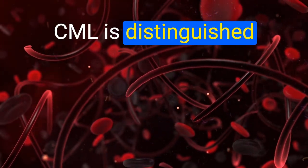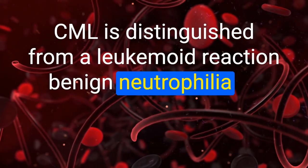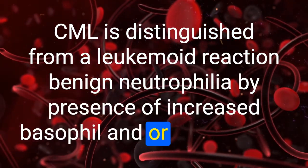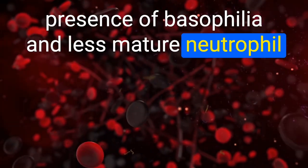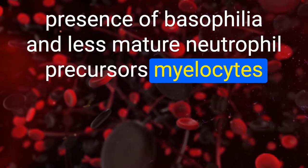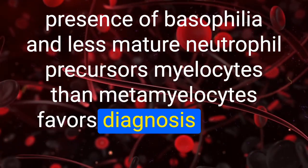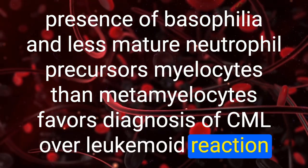CML is distinguished from a leukemoid reaction (benign neutrophilia) by the presence of increased basophils and/or myelocytes. Basophilia and less mature neutrophil precursors (myelocytes more than metamyelocytes) favor a diagnosis of CML over a leukemoid reaction.